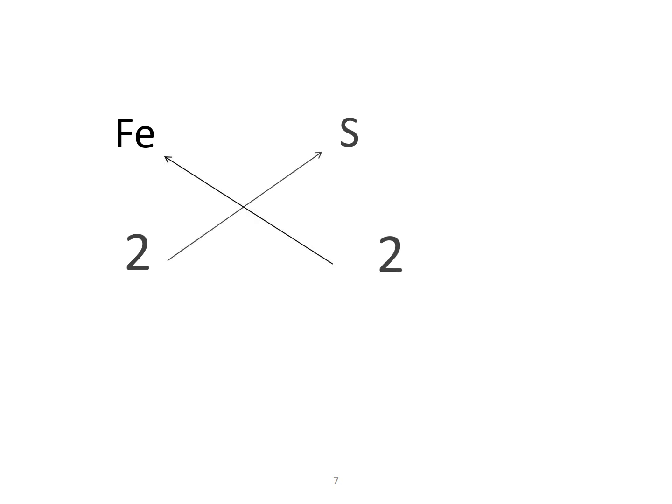We start by writing the symbols first: Fe and S, and then we write the valency numbers. It is 2 and 2, and then we cross multiply. So this will be Fe2S2. Now, because both the numbers are the same, they get cancelled. Because both the numbers are the same, they get cancelled and the entire formula becomes FeS.